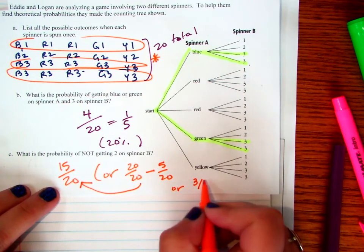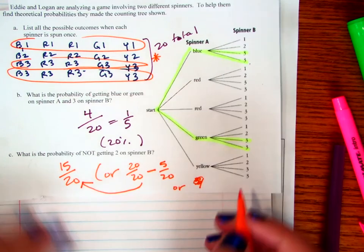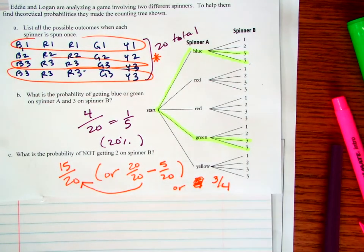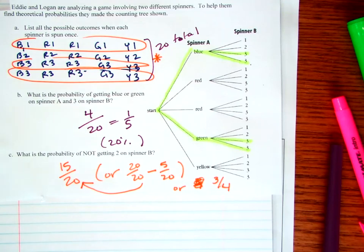This is one of the problems that in the past on the quiz has gone wrong a lot, because I think the 'blue or green' kind of confuses people. What's the probability of not getting a 2 on the second spinner? Not getting a 2 would include all of these options except the 2s. Out of the 20, I circled a total of 15 of them. Or you could take the total, 20 out of 20, and subtract the 5 that are 2s, giving you 15 out of 20, or 3 out of 4.